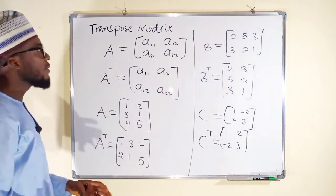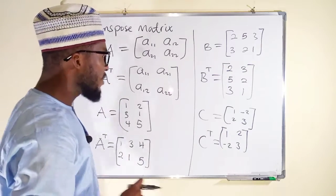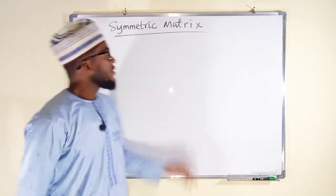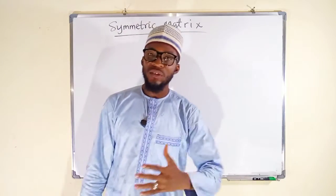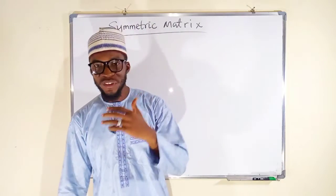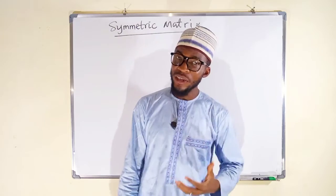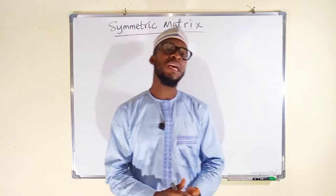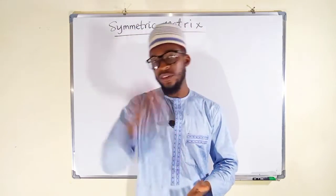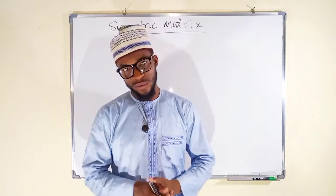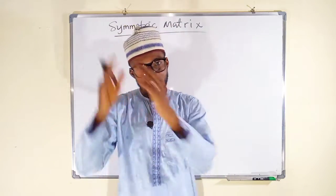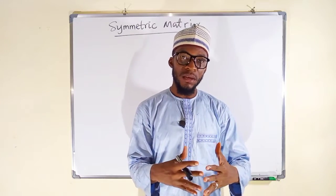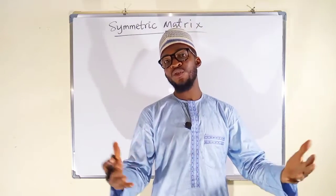Now let us talk about the Symmetric matrix. A matrix is said to be symmetric if and only if that matrix is exactly equal to its transpose. That is, if the transpose of a matrix and the original matrix are exactly the same, then they are said to be symmetric.